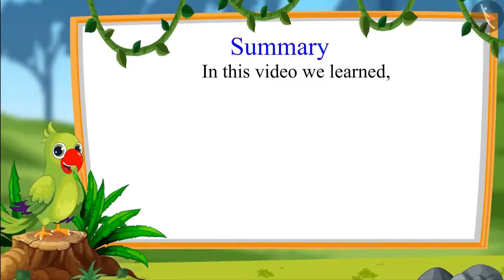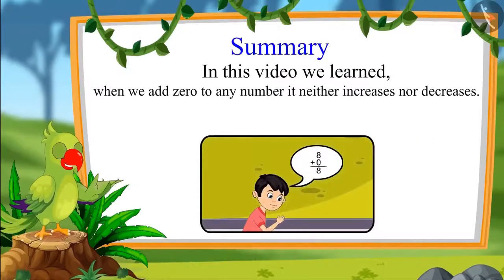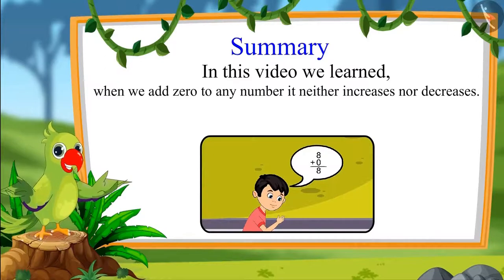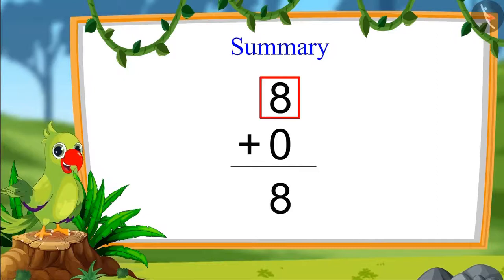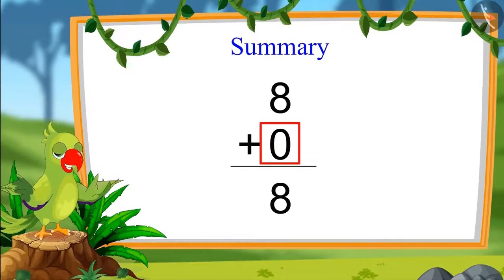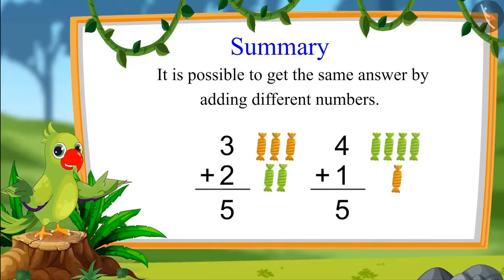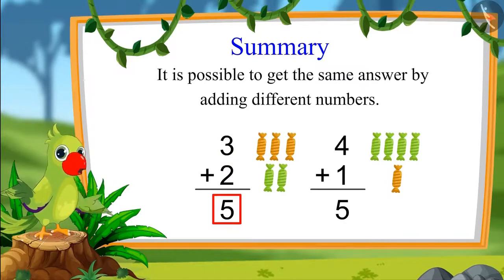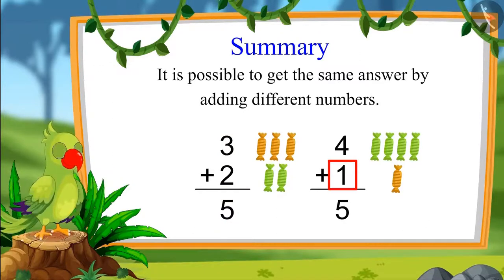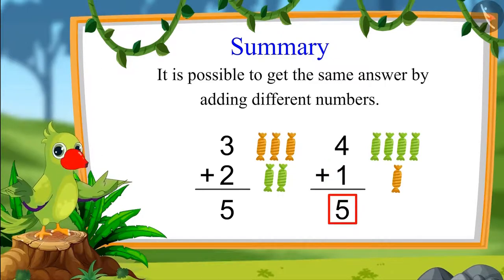So children, it is possible to get the same answer by adding different numbers. In this video we learned that when we add zero to any number, it neither increases nor decreases. For example, when we added zero to eight, the total remained eight. We also saw that three plus two equals five, and four plus one also equals five — we can get the same answer by adding different numbers.